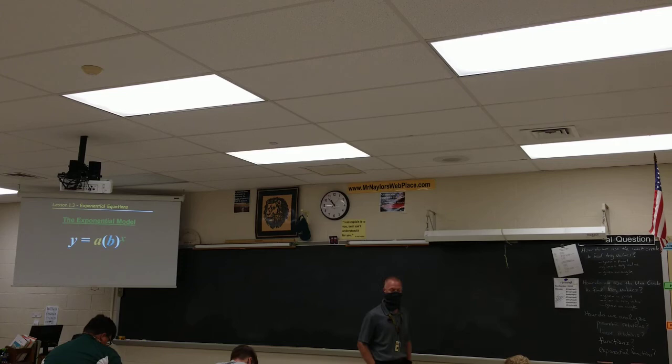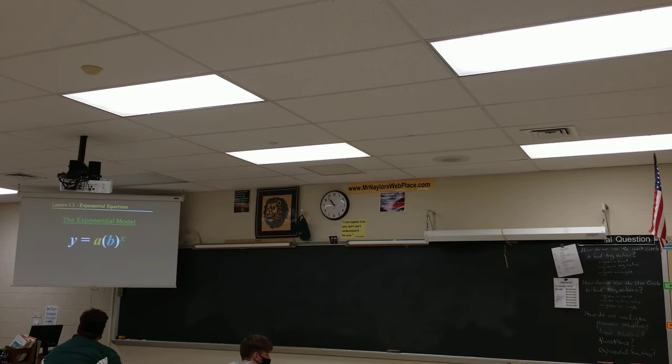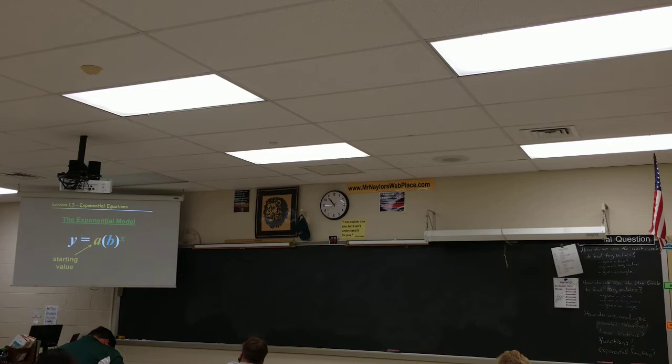The exponential model is basically the concept of having a base and an exponent. So we a lot of times call it A, B to the X. Now A, and this is just kind of like some facts, but we could kind of prove this. You may have heard it said before that the number in front is the starting value. It can also be thought of as the original Y-intercept. When we say starting value, we're referring to the Y-intercept.